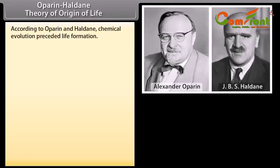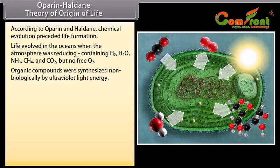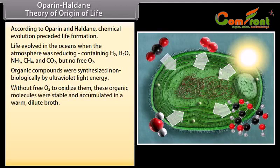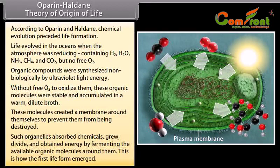Oparin-Haldane Theory of Origin of Life. According to Oparin and Haldane, chemical evolution preceded life formation. Life evolved in the oceans when the atmosphere was reducing, containing H2, H2O, NH3, CH4 and CO2 but no free O2. Organic compounds were synthesized non-biologically by ultraviolet light energy. Without free O2 to oxidize them, these organic molecules were stable and accumulated in a warm dilute broth. These molecules created a membrane around themselves to prevent destruction. Such organelles absorbed chemicals, grew, divided and obtained energy by fermenting available organic molecules — this is how the first life form emerged.